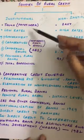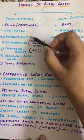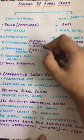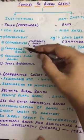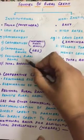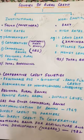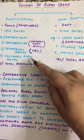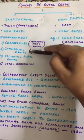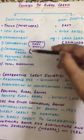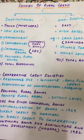Under institutional sources of credit, you have the government, cooperatives (which include organizations like Mother Dairy and Amul), commercial banks like SBI, and regional rural banks such as Sarva Haryana Gramin Bank. So under institutional sources you have government, cooperatives, commercial banks, and regional rural banks.